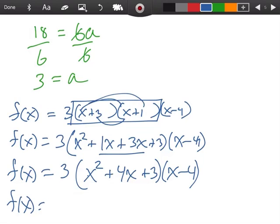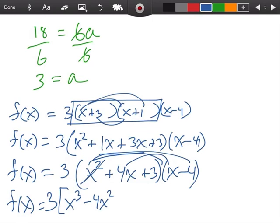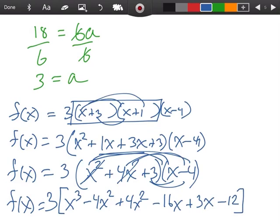Okay. And f of x equals 3. Let's do it this way. x squared times x is x to the third. x squared times negative 4 is a minus 4x squared. I've used that one. 4x times another x is a positive 4x squared. 4x times a negative 4 is a minus 16x. We've used that one. 3 times x is 3x. 3 times a negative 4 is a minus 12.